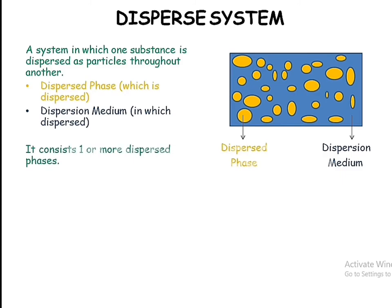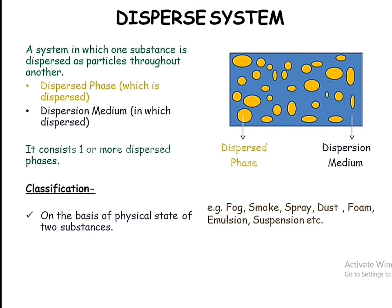This system contains at least one dispersed phase. Dispersed phases are classified on two bases. The first classification is on the basis of the physical state of the two substances — for example, fog, smoke, spray, dust, and foam. These all differ from each other because of different physical states of their dispersed phases and dispersion medium. The second classification is on the basis of the size of dispersed particles.